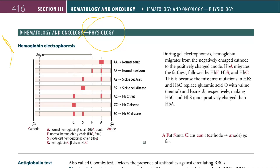In hemo-physiology, let's talk about hemoglobin electrophoresis. This is really good to understand. Normally, we have an AA normal adult. We have the negative cathode and we have the positive anode. During gel electrophoresis, hemoglobin migrates from the negative side towards the positive side — from the negative cathode to the positive anode.